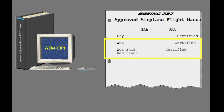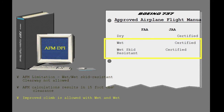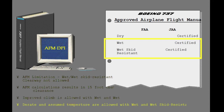Both the wet runway and wet skid resistant takeoff performance are part of the airplane flight manual. Because both are based on a 15-foot screen height, the use of clearway in the analysis of wet runway and wet skid resistant takeoff performance is prohibited. The obstacle clearance margin results in the net flight path clearing the obstacle by a minimum of 15 feet. V1 improved climb is allowed with wet or wet skid resistant performance. Both the assumed temperature and D-rate method of reducing takeoff thrust may be used with wet and wet skid resistant performance.